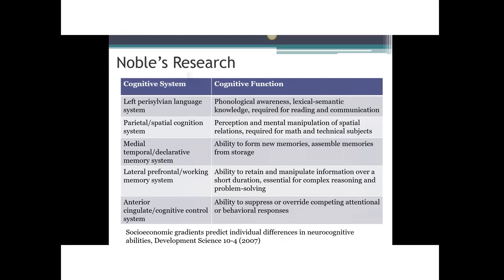Consider the impact of having more limited working memory, which we use to solve problems and manipulate information — this has a big impact on reading comprehension. And what will be the impact of having less attentional and inhibitory control? These cognitive processes are the foundation of learning. The research really shows us that students from low SES come to our classrooms with less well-developed brains — physiologically and functionally different from their more advantaged peers. But as we are going to see, this has a much more positive potential than we have ever seen before.